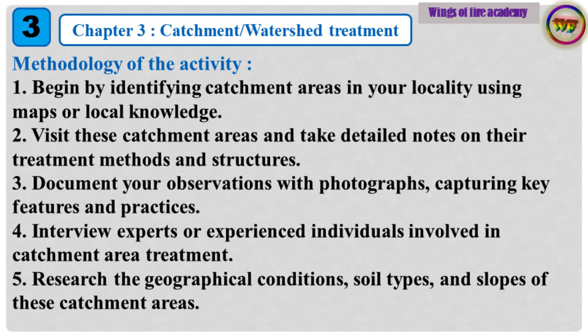Methodology of the activity: 1. Begin by identifying catchment areas in your locality using maps or local knowledge. 2. Visit these catchment areas and take detailed notes on their treatment methods and structures. 3. Document your observations with photographs, capturing key features and practices. 4. Interview experts or experienced individuals involved in catchment area treatment. 5. Research the geographical conditions, soil types, and slopes of these catchment areas.